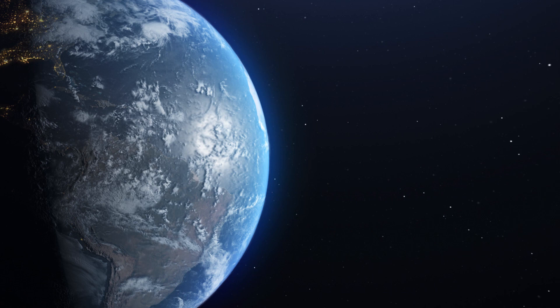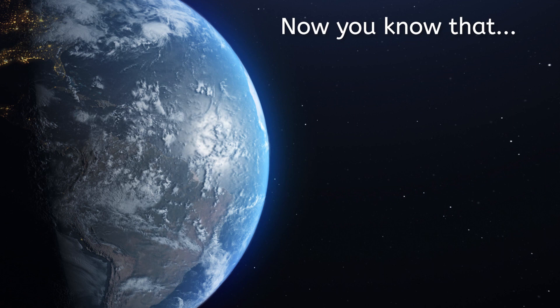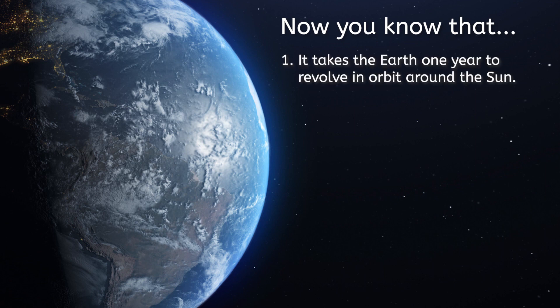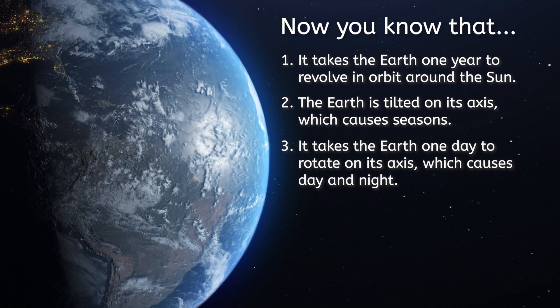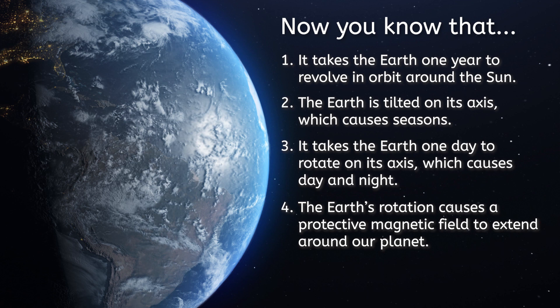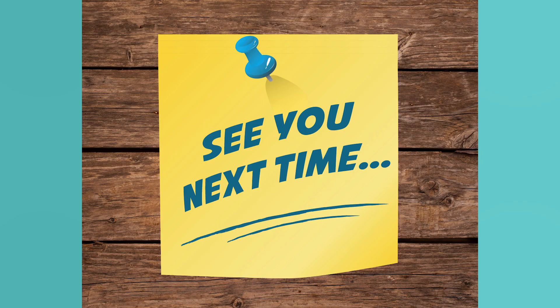Let's recap what we covered in this lesson. Now you know that it takes the Earth one year to revolve in orbit around the Sun. The Earth is tilted on its axis, which causes seasons. It takes the Earth one day to rotate on its axis, which causes day and night. And the Earth's rotation causes a protective magnetic field to extend around our planet. Don't forget to check out the engaging games and thought-provoking resources related to this lesson to prepare for next time, when we'll explore the Earth's spheres! And remember, in Earth Science as in life, you rock! See you next time!